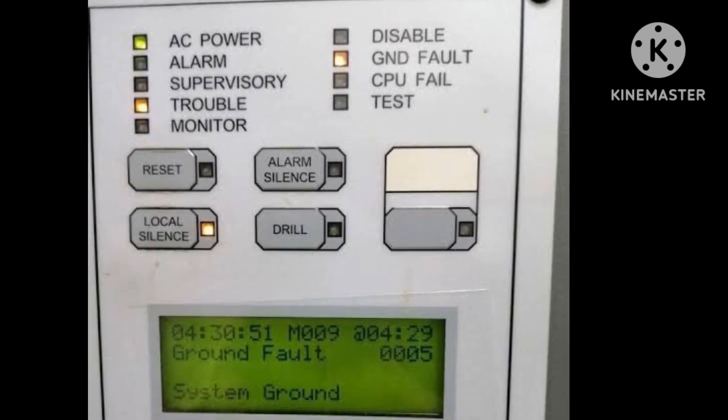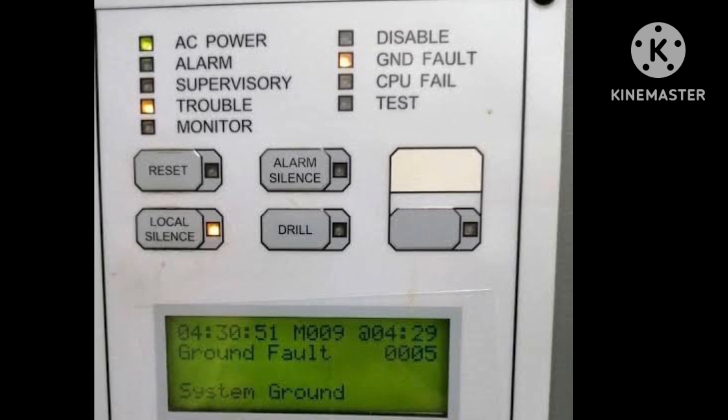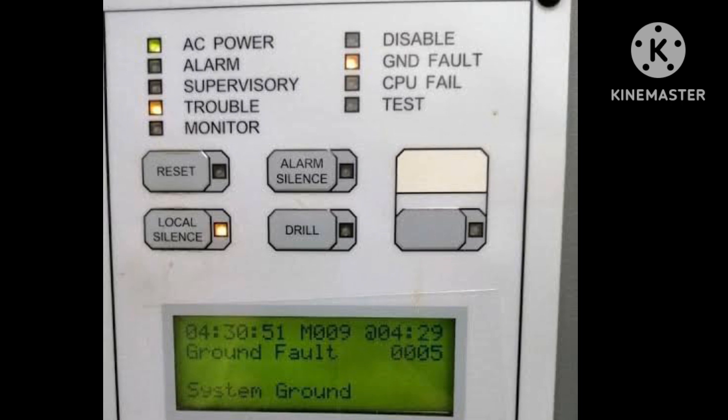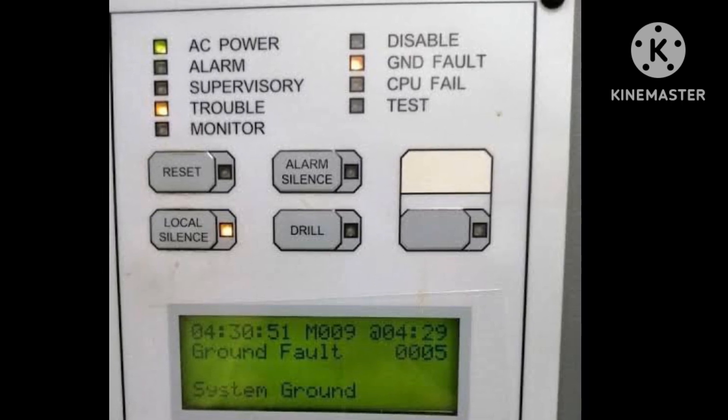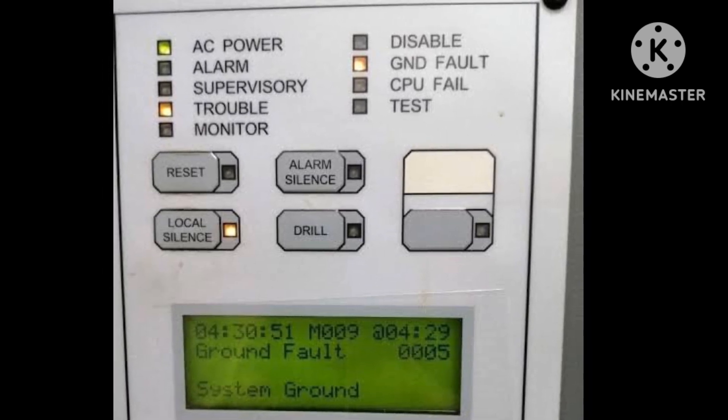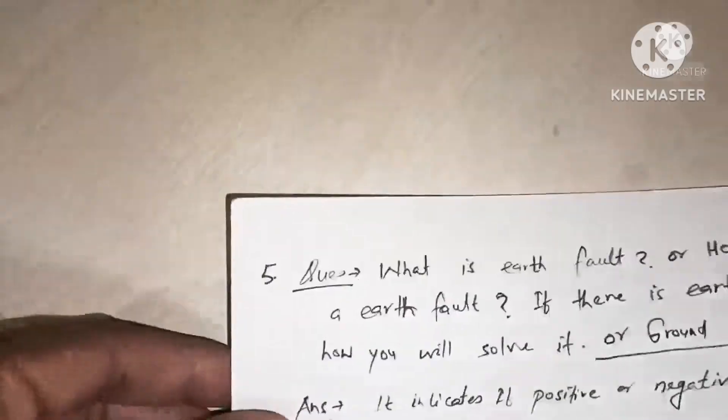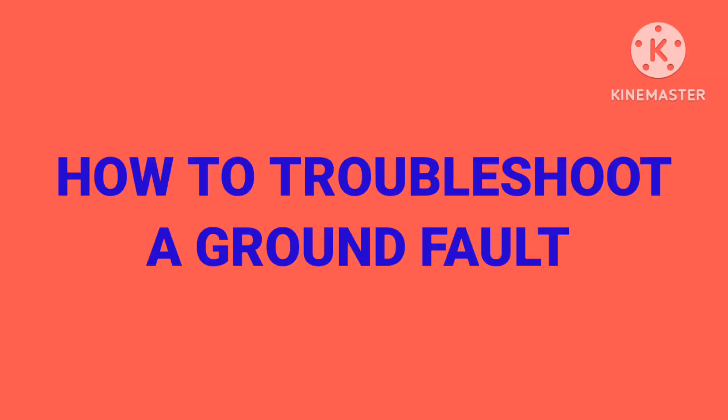Whenever any wire is nicked or touches the metal, then ground fault comes in the panel. It's the same as short circuit and ground fault. Short circuit is when hot and neutral wires touch. Ground fault is when hot wire touches ground. So it's very important to troubleshoot the ground fault because this ground fault may affect our panel components.